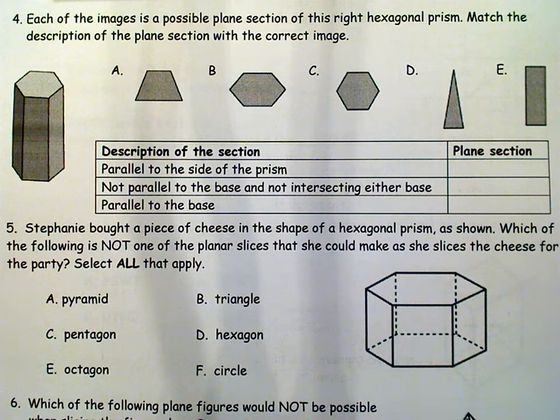All right, number four. Each of the images is a possible plane section of this right hexagonal prism. Match the description of the plane section with the correct image.